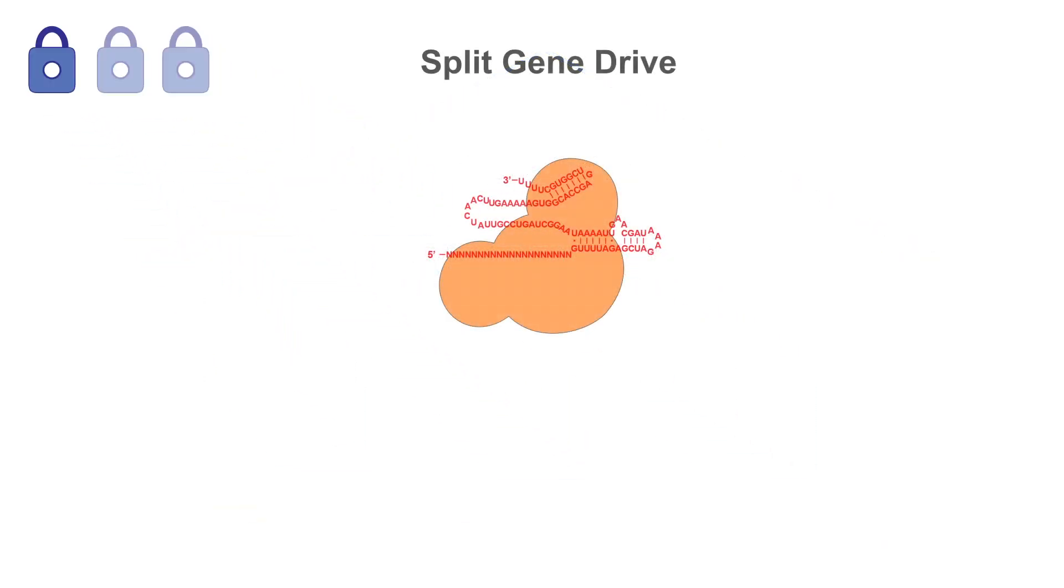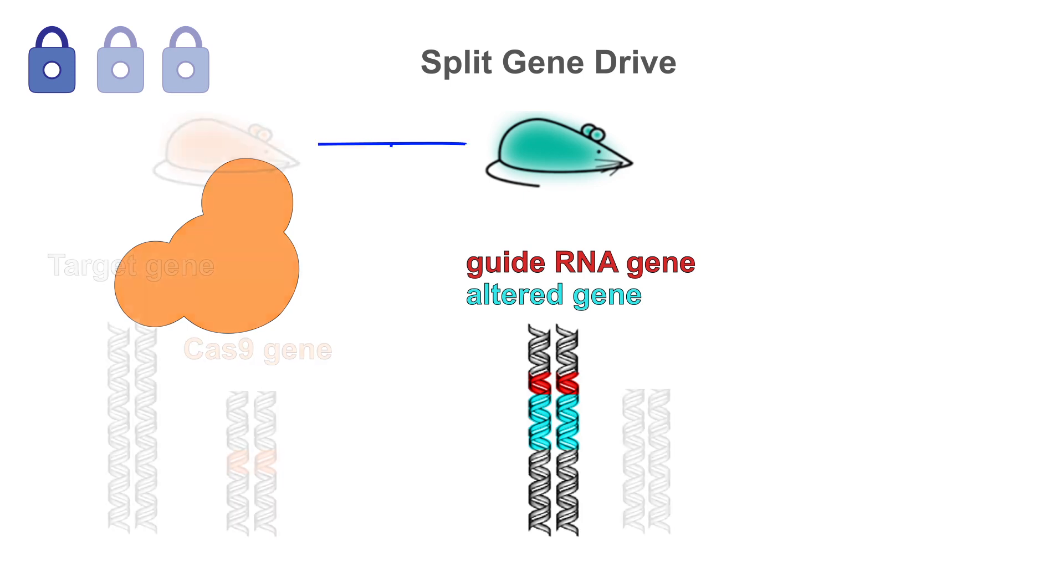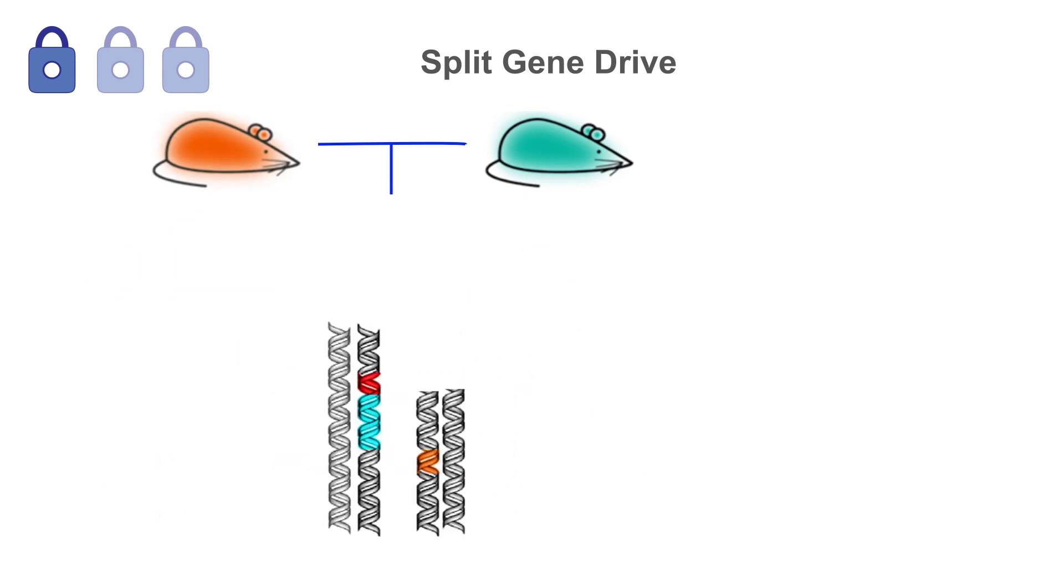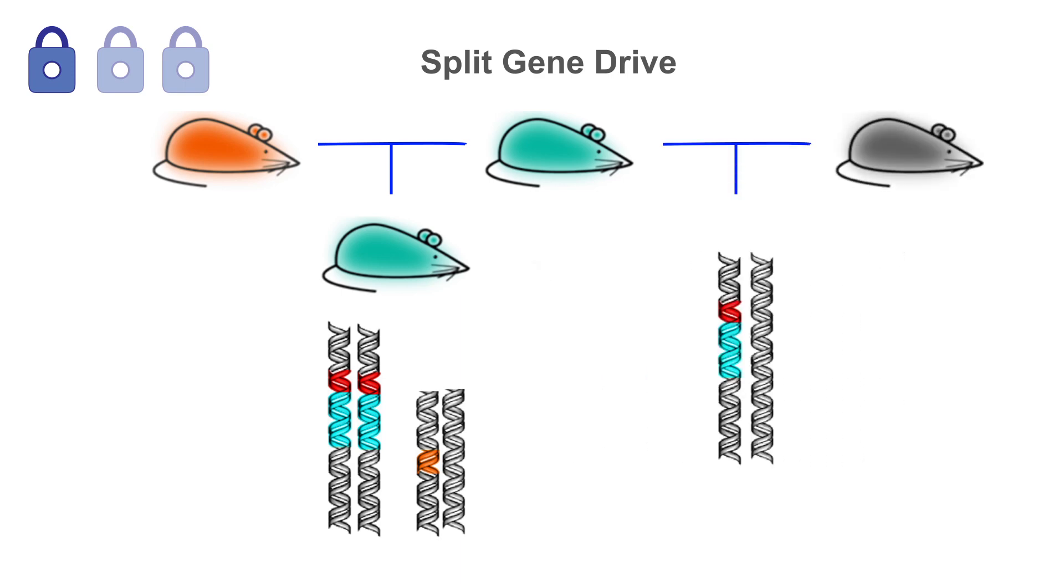The first safeguard is to split the two components of the gene drive and include only one of them in the altered gene. For example, an organism carrying a split gene drive might have the altered gene together with the sequence encoding guide RNAs. When it mates with the laboratory organism carrying the Cas9 gene, the drive is active, causing the alteration and guide RNAs to be inherited by all offspring. But when it mates with a wild counterpart that is not carrying the Cas9 gene, the gene drive does not function.